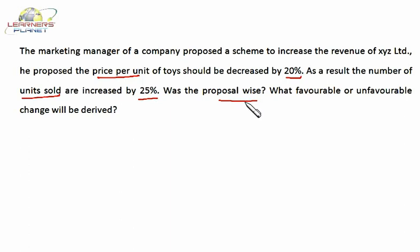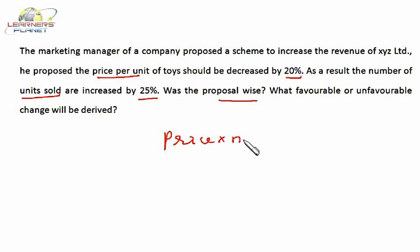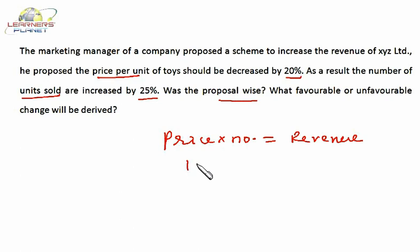Here we are dealing with two variables: number of units and their price. Price into number equals revenue. Now let's assume the price per unit is 10 and the number of units is also 10, so the total revenue generated is 100.